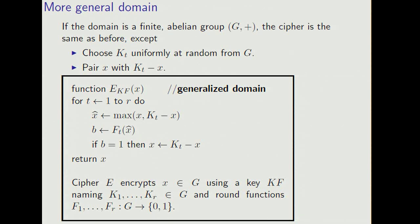And finally, how to handle a general domain, a non-binary domain. Suppose that the domain is a finite abelian group G, then the cipher works the same as before, except now we choose kt uniformly at random from G, and we pair each x with kt minus x.